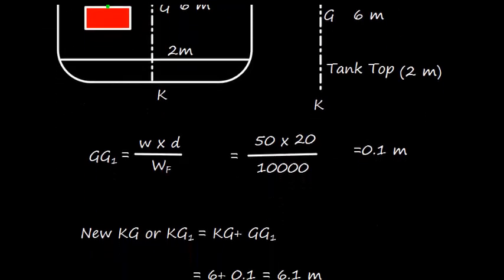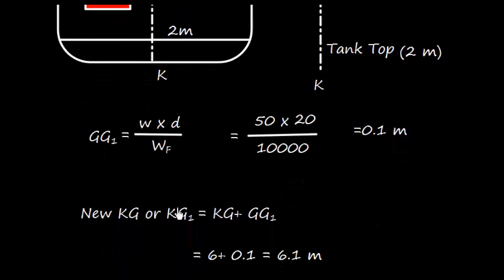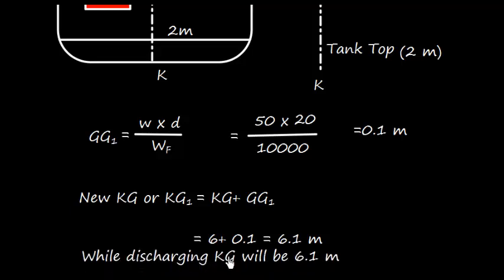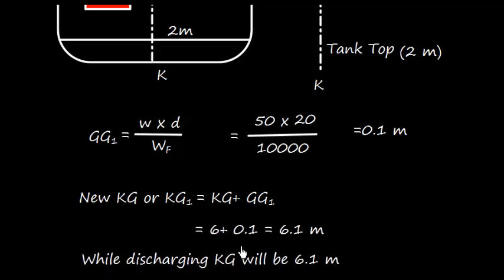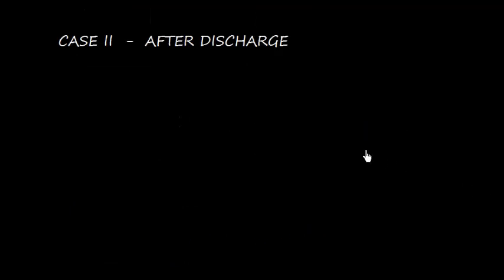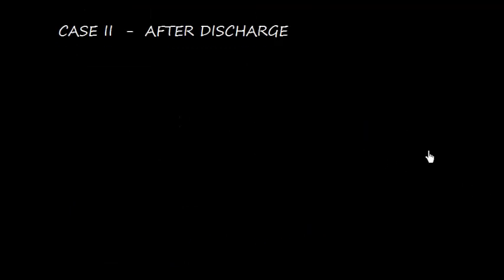So we can find easily new KG. The new KG or KG1 will be KG plus GG1. Here we should note that we need to add this so that the final value is 6.1. So we can say that while discharging, the KG will be 6.1. However, we need to understand the second case. Now let us discuss what happens after discharge.